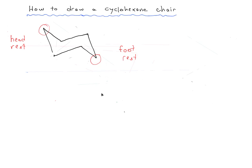The next thing to do once you've drawn the headrest and the footrest is to start putting in the axial substituents. I'd strongly advise starting with axial because axial is much easier to put in first — it's basically just drawing a vertical line going straight up or straight down. Find your footrest and draw an axial line going straight down, then find your headrest and draw a line going straight up. The groups alternate going straight up and straight down along the ring: up on the headrest, down next door, then up, down, up, down — and we've drawn all of our axial groups.